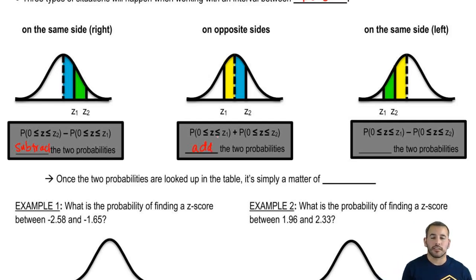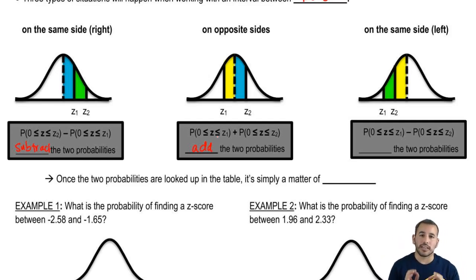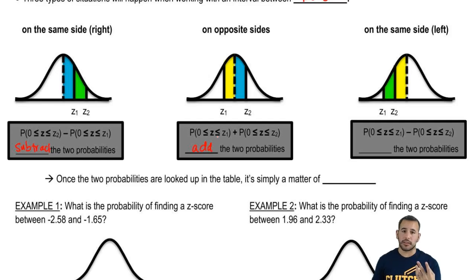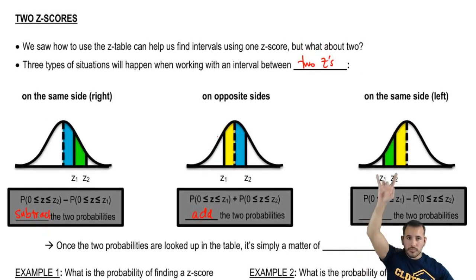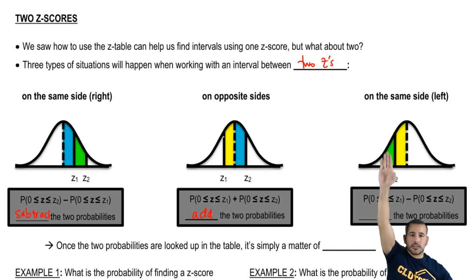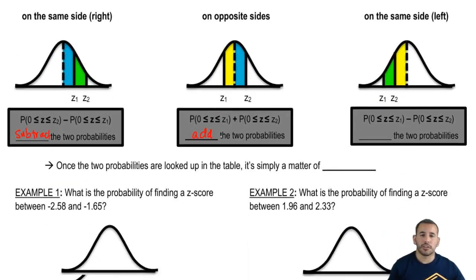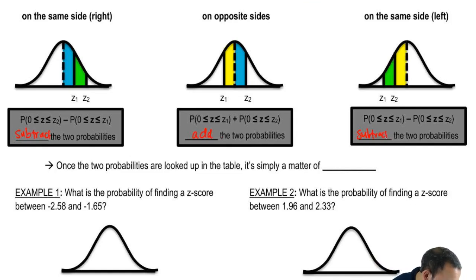And then the same sign on the left. It may seem like the left would be different, but it's actually the exact same situation as on the right side. Instead of z2 being the bigger one, z1's the bigger one now. So zero to z1 is a big chunk. We have zero to z1 and then zero to z2 — we get the bigger one and subtract the smaller one to get the leftover area. So zero to z1 minus zero to z2. Whenever they're on the same side, you subtract. Whenever they're on opposite sides, you just add them together.